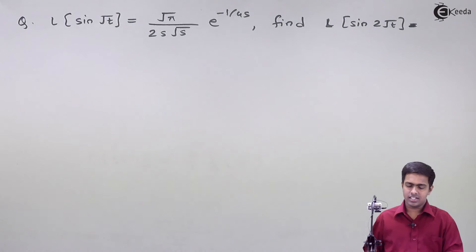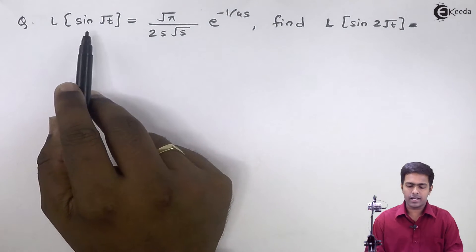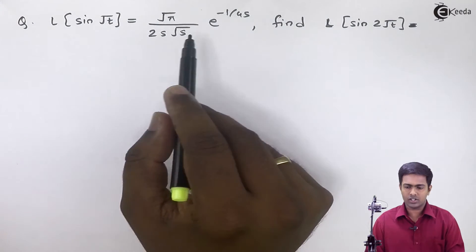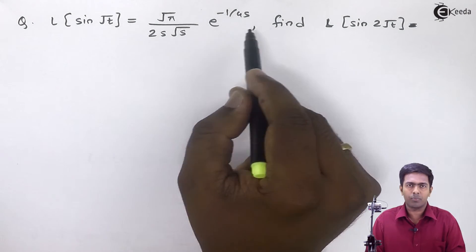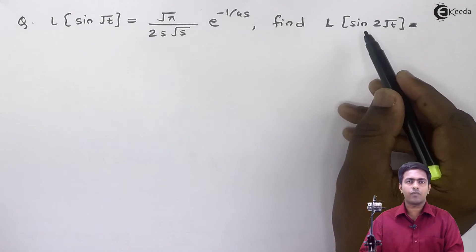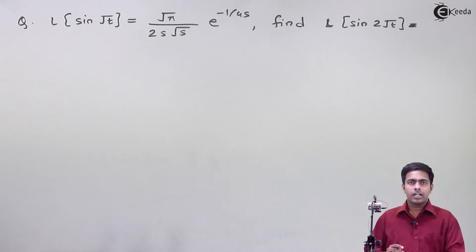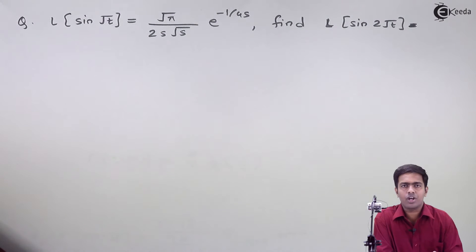The next question is: if the Laplace transform of sine root t is equal to root pi upon 2s root s, e raised to minus 1 upon 4s, then what is the Laplace transform of sine 2 root t? To solve this problem, I am going to use the change of scale property.